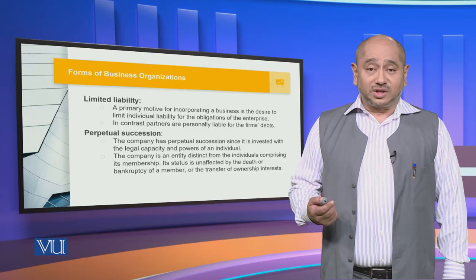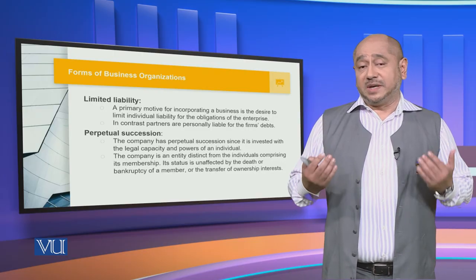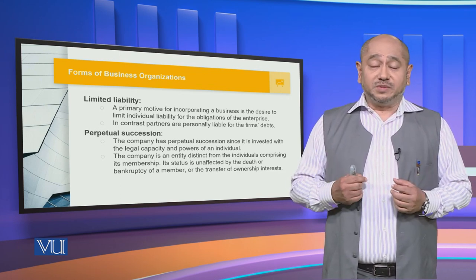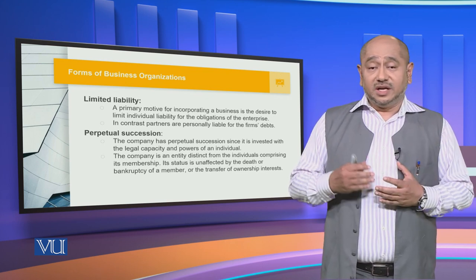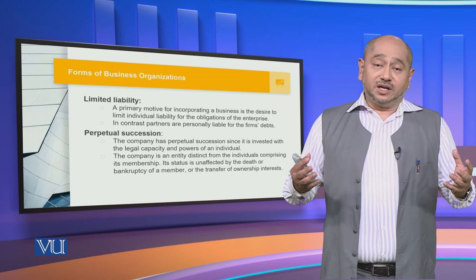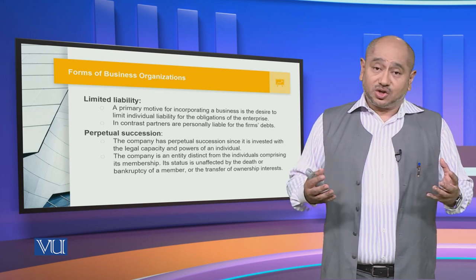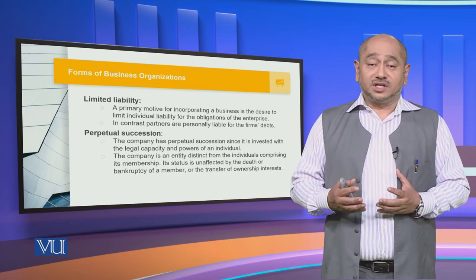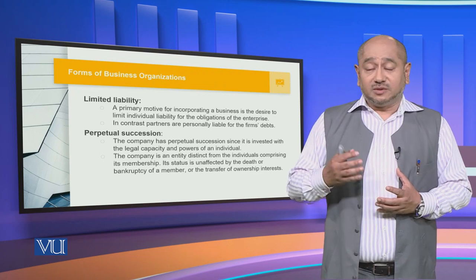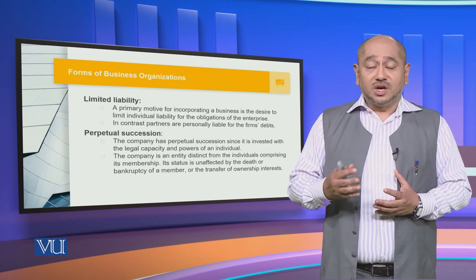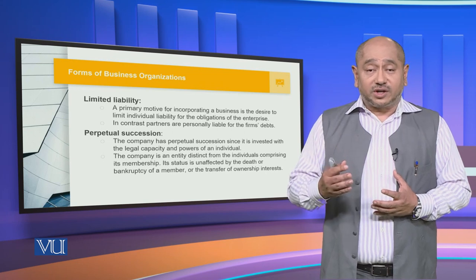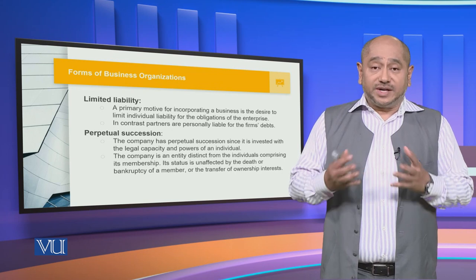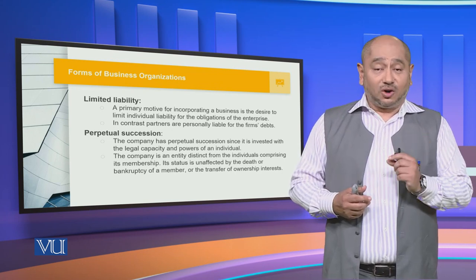Coming back to business organizations — they can also be of many types: a proprietorship, a partnership, a private limited company, a public limited company, a joint venture, a collaboration, or a conglomerate. We will be looking at the more corporate organizations because we will be looking at this from the corporate governance context, and we will see how the Securities Exchange Commission regulates these different organizations to create an environment of corporate governance.